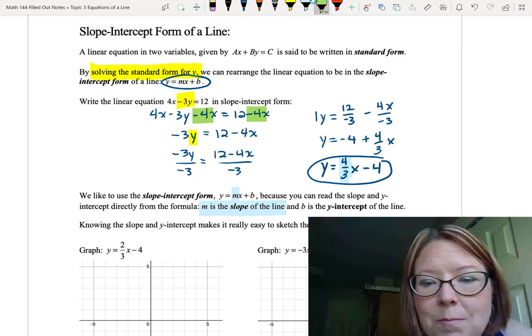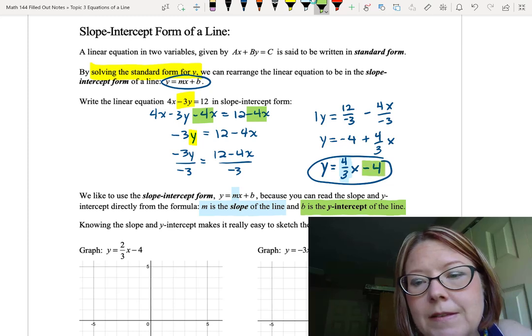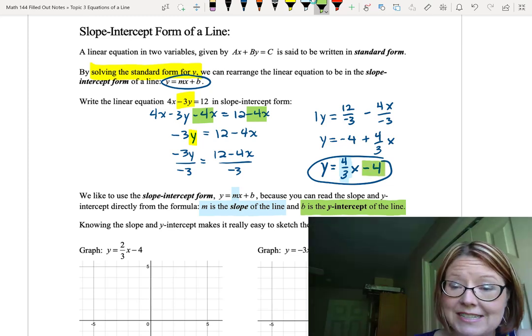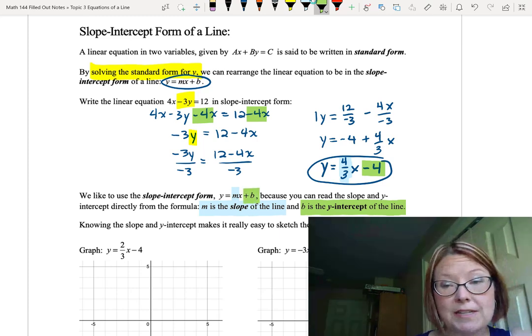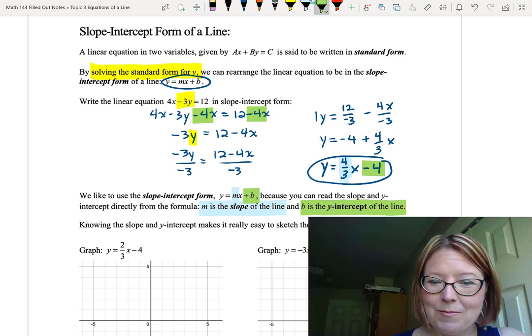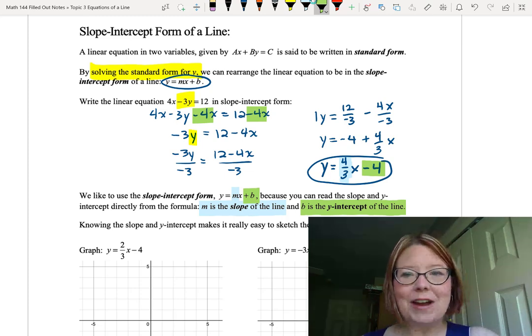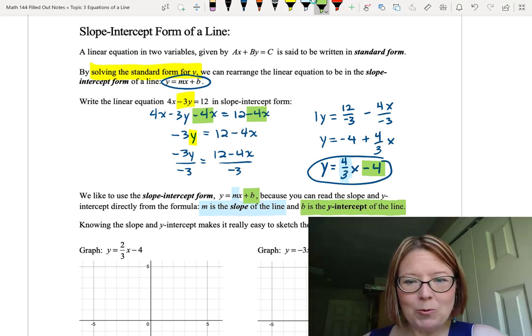We also know that the b value is the y-intercept of the line. In this case, the y-intercept is negative 4. It's the number that's added or subtracted from the x term. Knowing those two things, the slope and the y-intercept, makes it really easy to sketch the graph of a line, because we can simply plot the point and then use a slope triangle to continue to find more points on that line.